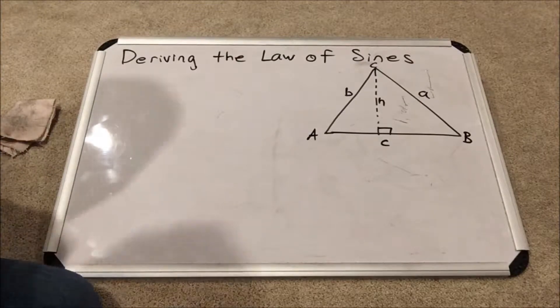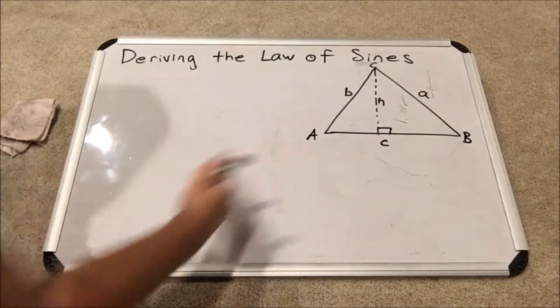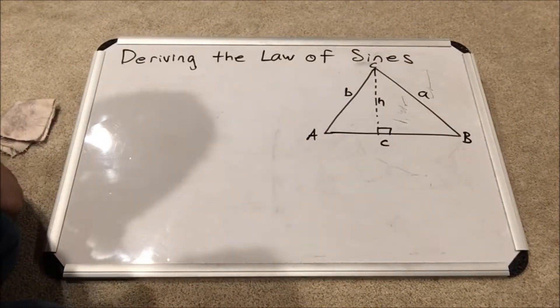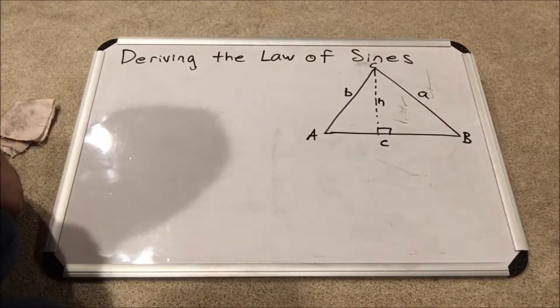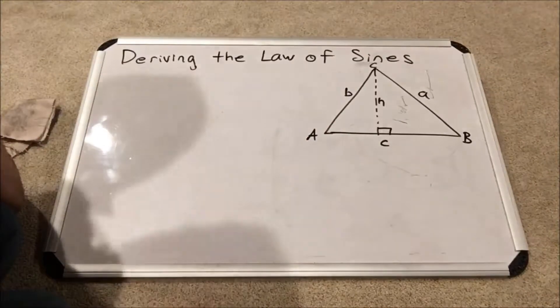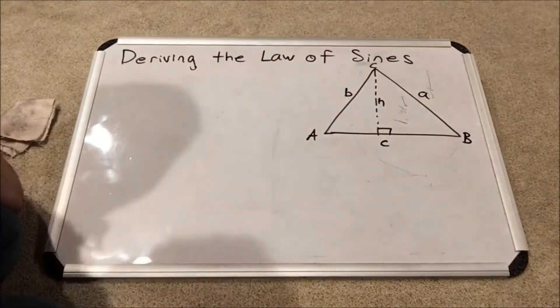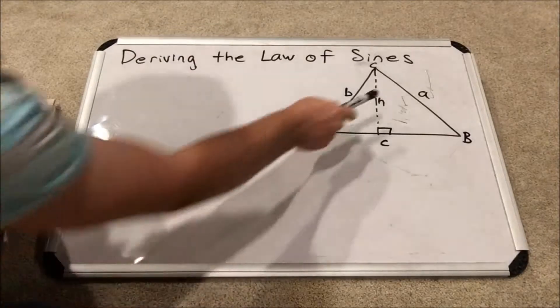So here we have our model triangle. See how I've notated the sides and their opposite angles with the same letter. And notice how I've also constructed an altitude from side C up to angle C. This altitude will be labeled H.